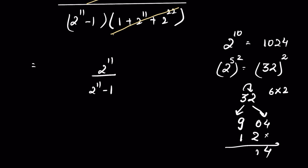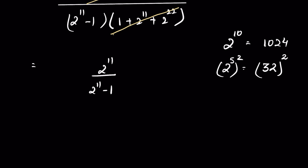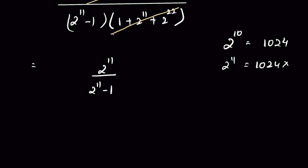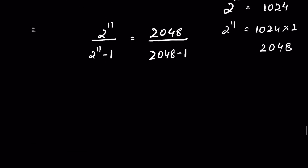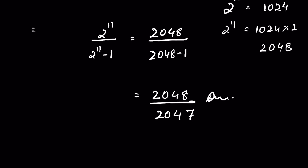Adding up gives 1024, so 2¹⁰ = 1024. Therefore 2¹¹ = 1024 × 2 = 2048. The final answer is 2048 / (2048 - 1) = 2048 / 2047. You can convert it to a mixed fraction or leave it as is. Let me know how you solved it in the comment section — thanks for watching!